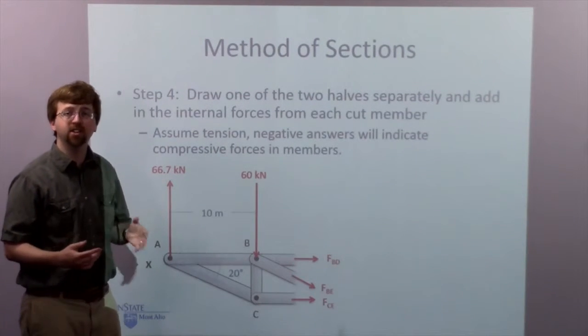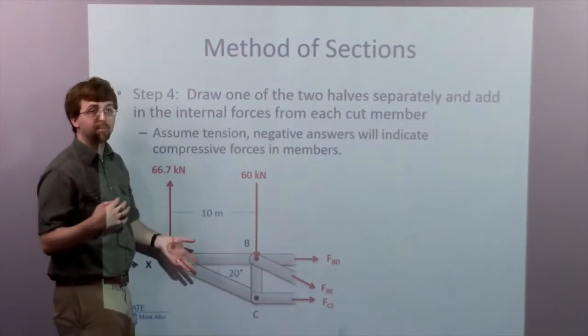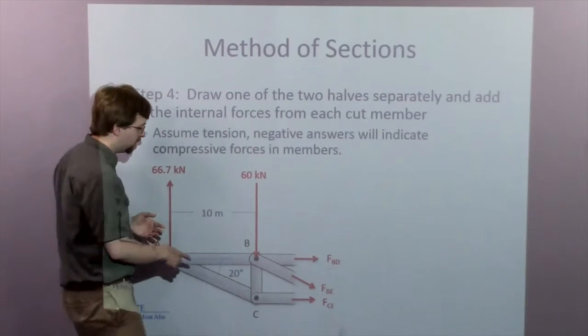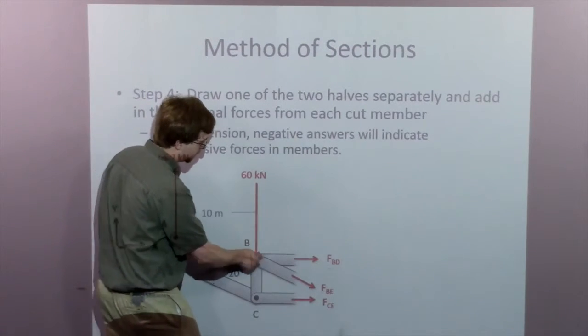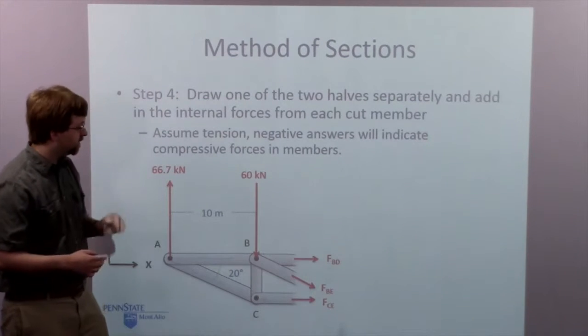And so these forces are going to be the forces, the tension or compression forces in each of the members. And they're going to be acting along the direction of that member. So force BD is the force in member BD, the tension or compression. And it's going to be going in the direction from point B over to point D over here.